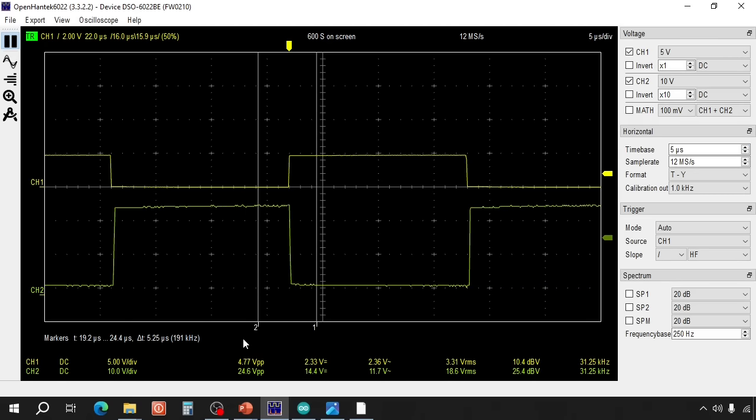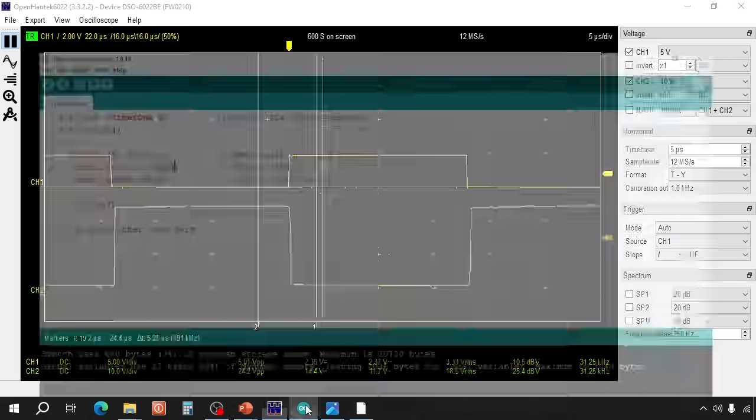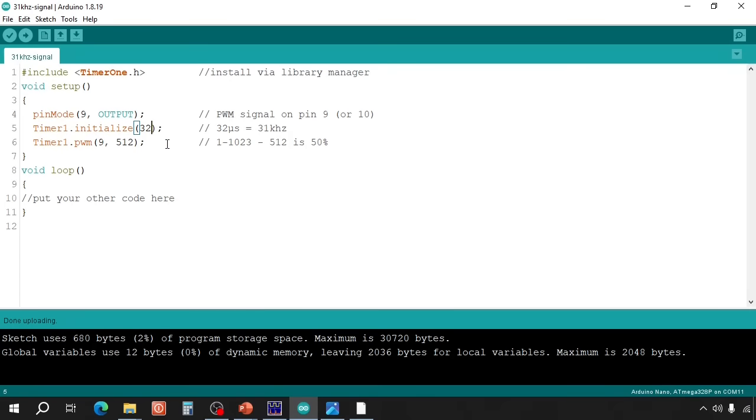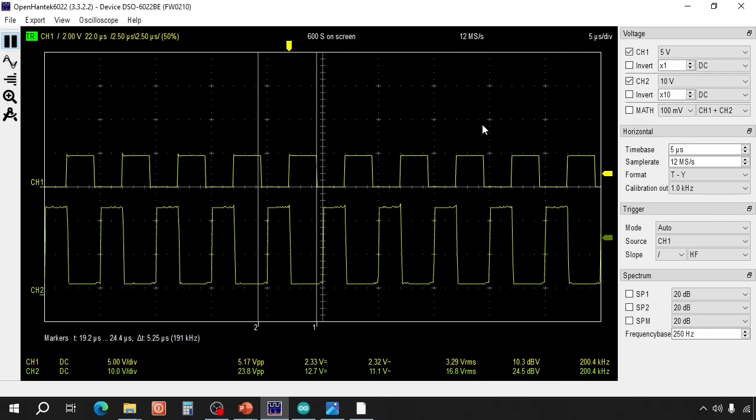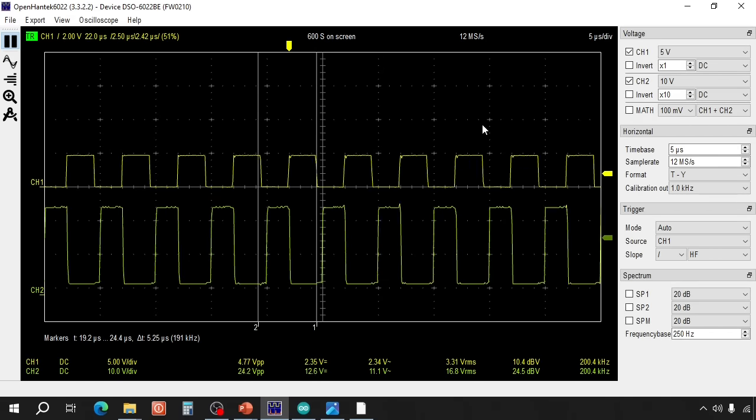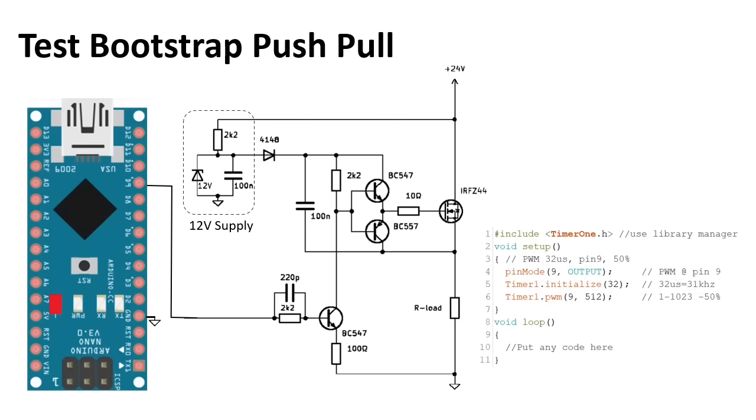Now let's increase the frequency to 200 kilohertz. That still looks okay at 200 kilohertz and with just some general transistors. So this circuit works well, but we do need quite a lot of components. Let's check out the integrated solution, the level shifter IC.